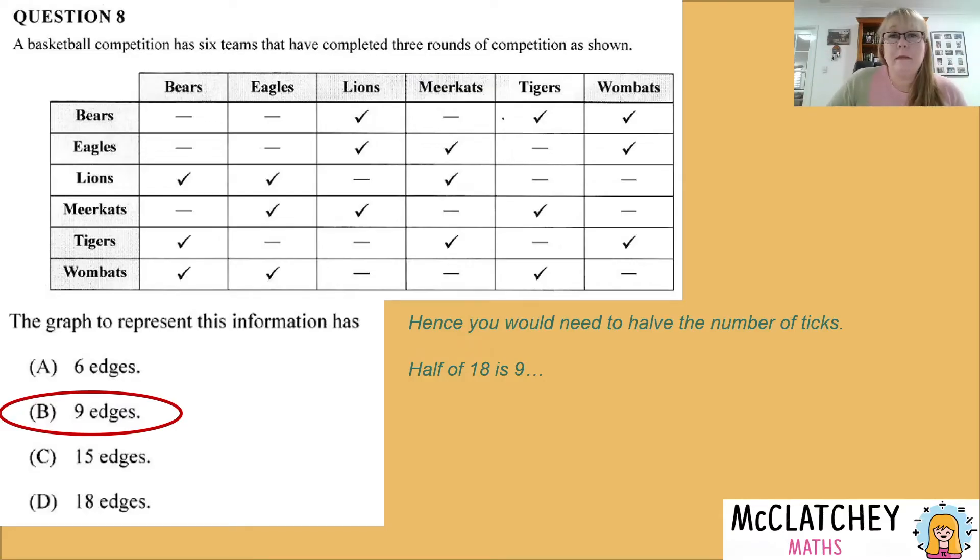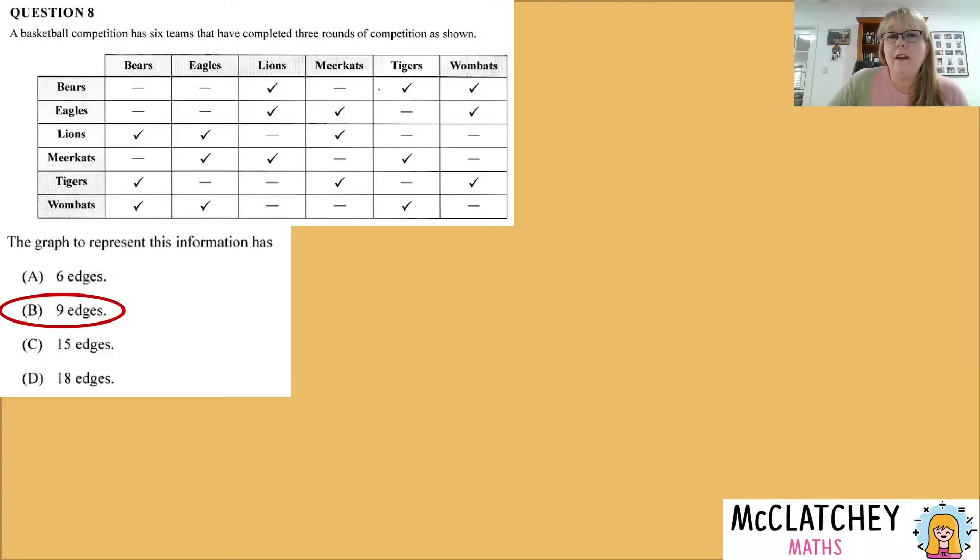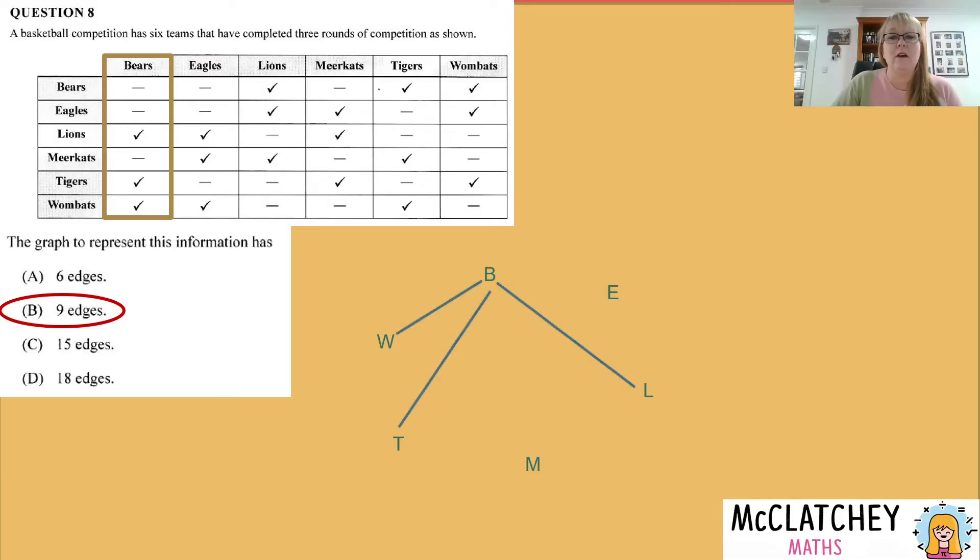So that's a process of logic that we're using with our knowledge of how we would go about drawing the network. Now, some people like to actually verify that with a drawing. So we're going to draw it, it wouldn't hurt to verify it to check our work if we had a bit of time up our sleeve. But bearing in mind, once again, it's only worth a mark. And that's why being able to do it quickly is important. So first of all, if I'm going to draw it, I'm going to put each of those teams represented as different vertices. And then I'm going to go one column at a time or one row at a time, I read up and down. So bears, the bears go versus the lions, they go versus the tigers, they go versus the wombat. That's our first set of vertices.